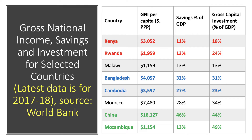Look at Mozambique, which has a huge savings gap. Their savings are low as a share of GDP — around 13% — but they had a huge level of investment, nearly just under half of GDP. A lot of that links to the discovery and the investment needed to extract reserves of oil and natural gas.